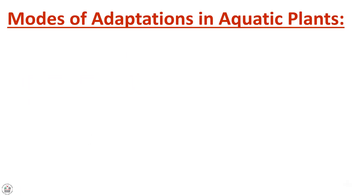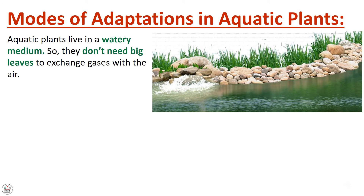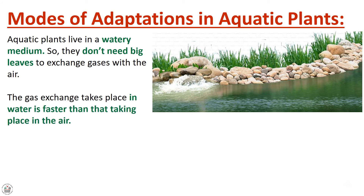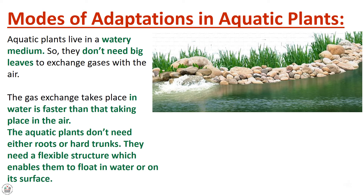Modes of adaptation in aquatic plants: aquatic plants live in a watery medium, so they don't need big leaves to exchange gases with the air. The gas exchange that takes place in water is faster than that taking place in the air. Aquatic plants don't need roots or hard trunks — they need a flexible structure which enables them to float in water or on its surface.